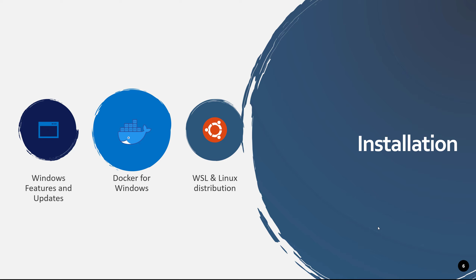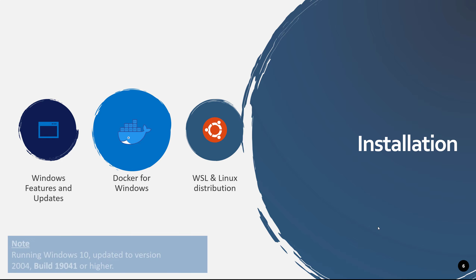I'm going to show this on the professional edition of Windows 10, but make sure you are running Windows 10 updated to version 2004, build 19041 or higher — otherwise you cannot run WSL2. You need to go to Windows Features and Updates, install the Windows Subsystem for Linux, install any Linux distro, and then hook Docker for Windows to choose that WSL binary.